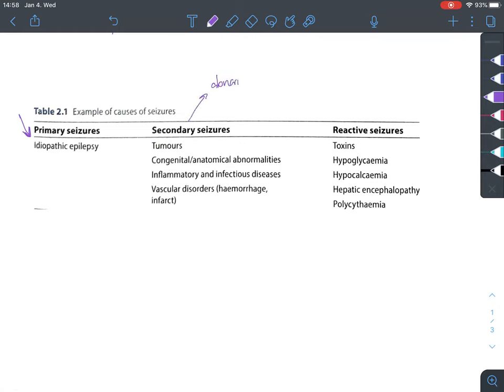Secondary seizures are caused by abnormalities inside the skull. So we can have a tumor growing there. We can have congenital or anatomical abnormalities. We could have inflammatory or an infectious disease leading to swelling or edema inside the skull. And we can have vascular disorders, which can also lead to swelling and edema inside the skull, which can cause seizures.